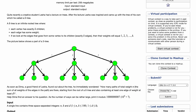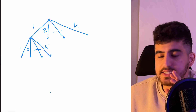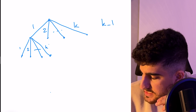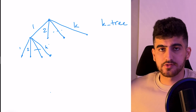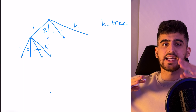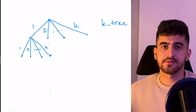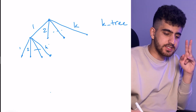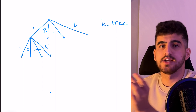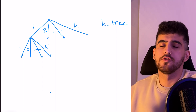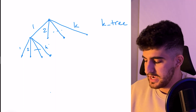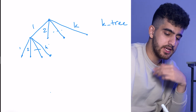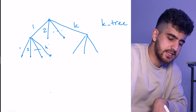Hey guys, this is Shayan and today I'm going to solve another 1500+ problem from Codeforces. The problem I want to discuss is K3 431C. In this problem, K-tree is defined as an infinite tree where each vertex has exactly K children, and the weight of the edges to the children from left to right is 1, 2, 3, 4, up to K. This tree is infinite, so each vertex has exactly K children and it goes forever.